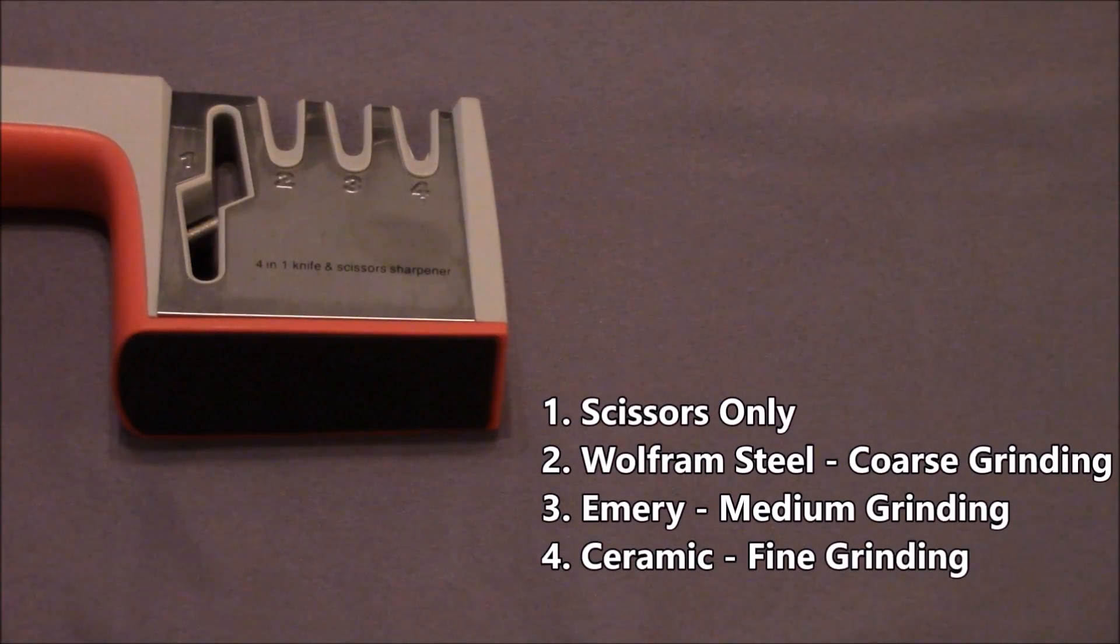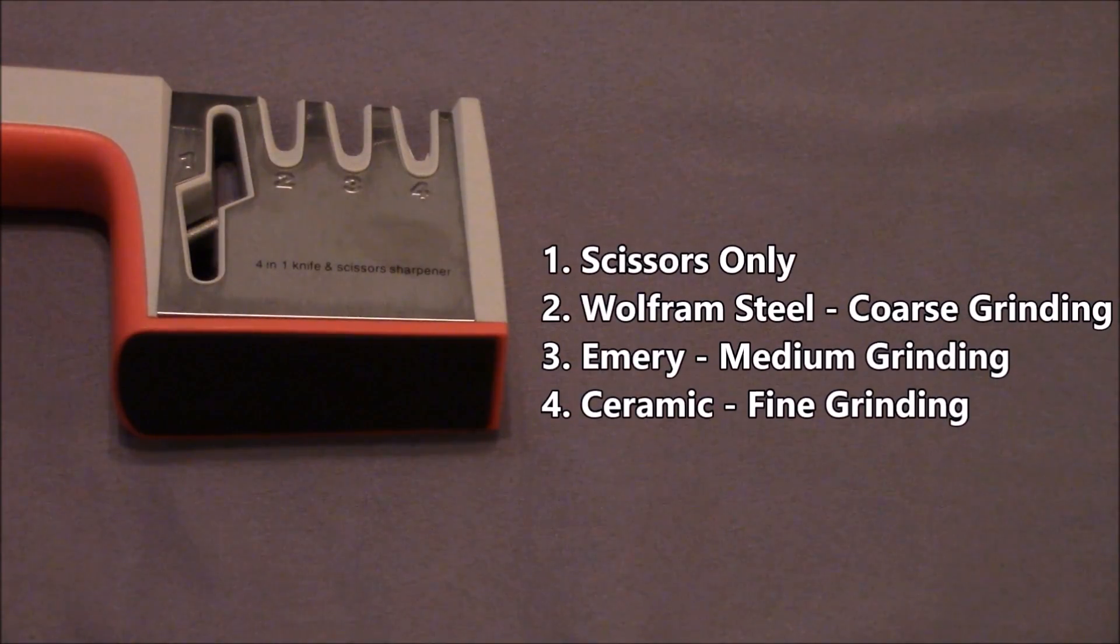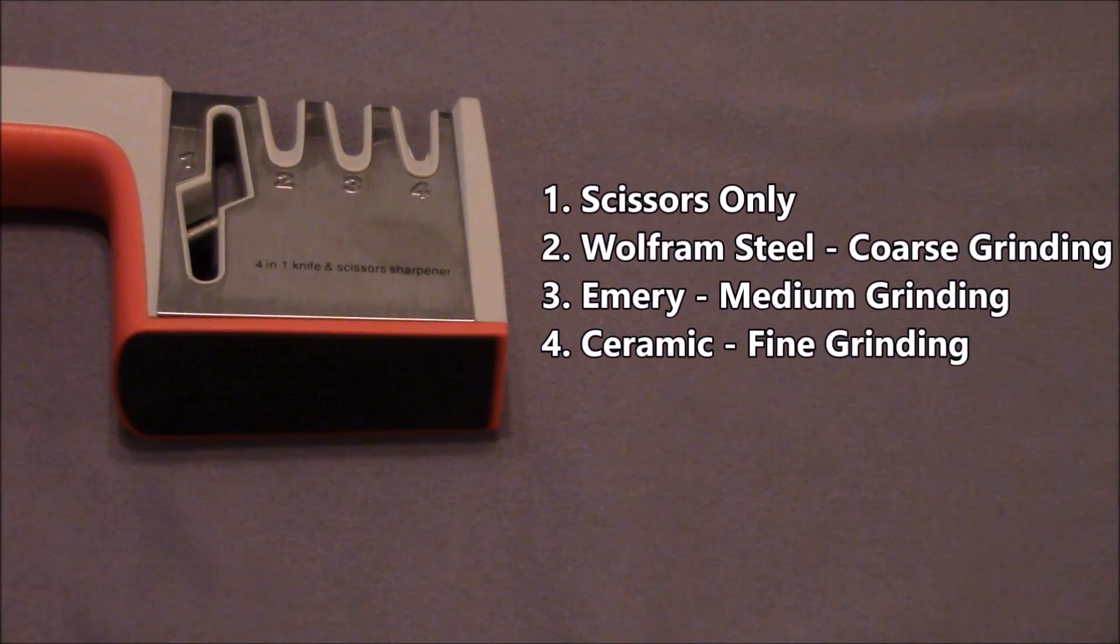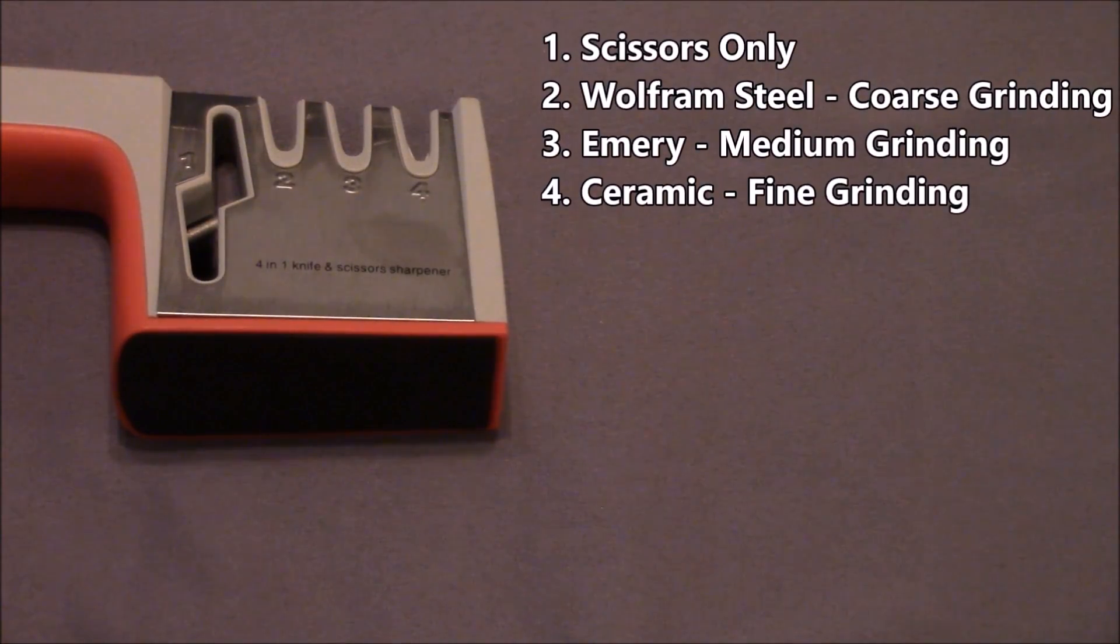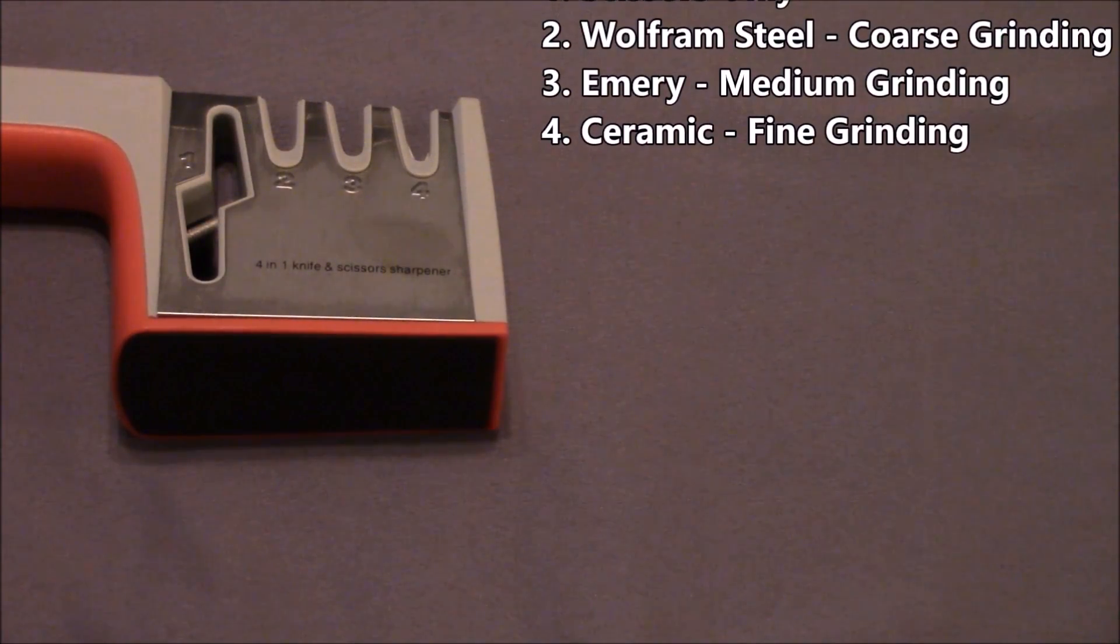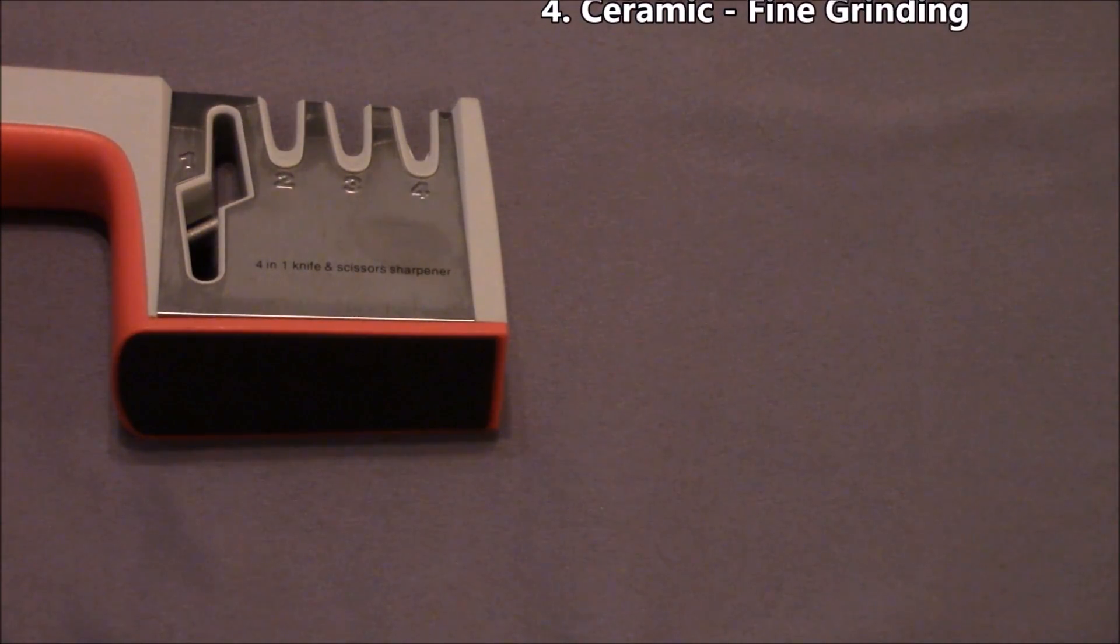Slot one is specifically designed for scissors. Slot two is for coarse grinding, and that would repair damaged blades. Slot three is designed for medium grinding, and that is for blade maintenance. Slot four is for fine grinding, and that is for removing impurities and burrs on the edge. This makes the blade smooth and sharp.